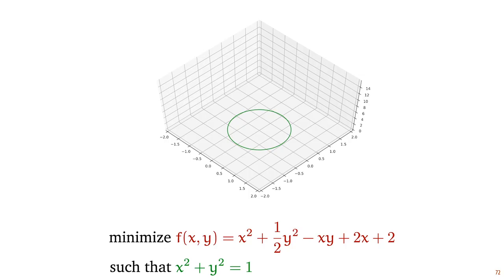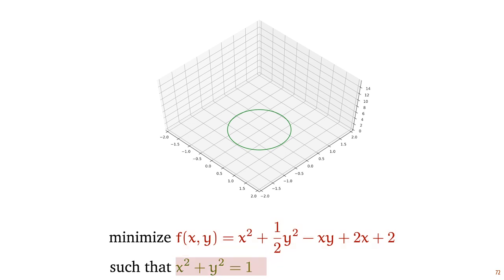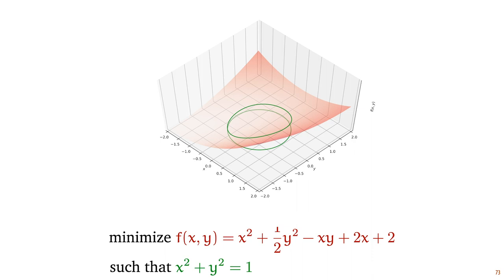First, let's make it a little bit more intuitive what optimization under constraints looks like. Here we have a relatively simple constrained optimization problem. We have a function of two variables x and y, for which we want to find a minimal point, and we have a constraint. In this case, the constraint specifies that the solution must lie on the unit circle — that is, x and y together must make a unit vector. We've illustrated this unit circle here in green. Among the set of x's and y's that together lie on this circle, we want to find the value that gives us the lowest point for this objective function f.